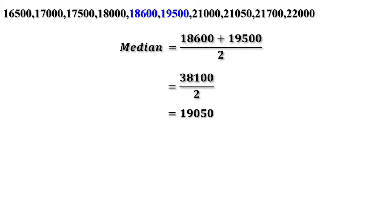The median income of 10 households is 19,050 rupees and the mean income is 19,285 rupees. Both give a reasonable estimate of the economic status of the first 10 households, and there is no great difference between the median and the mean. The high income of the 11th household does not change the median much. To find the median: first write the scores in increasing order. If the number of scores is odd, the middle number is the median. If even, half the sum of the two middle numbers is the median. Median gives a clearer understanding even when some numbers are very much less or more than others.